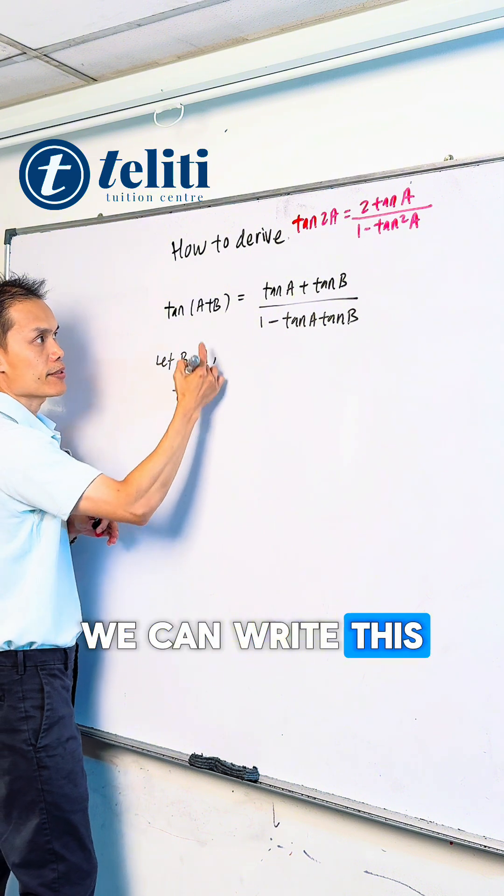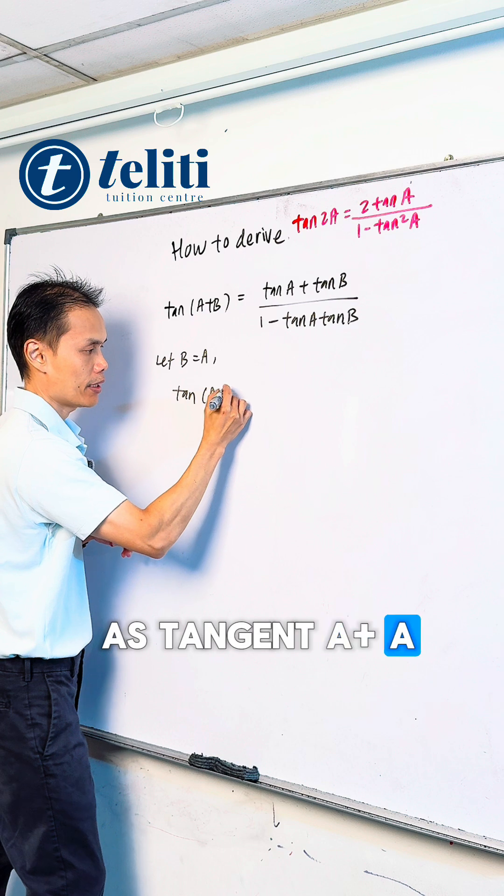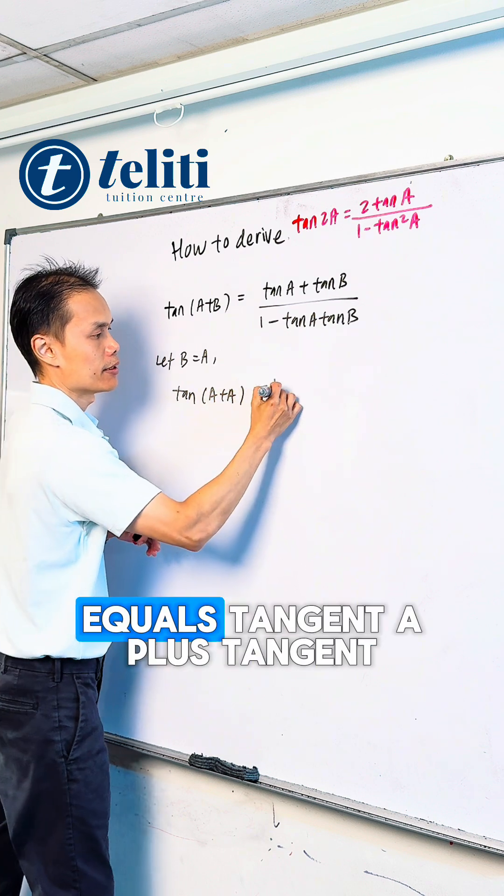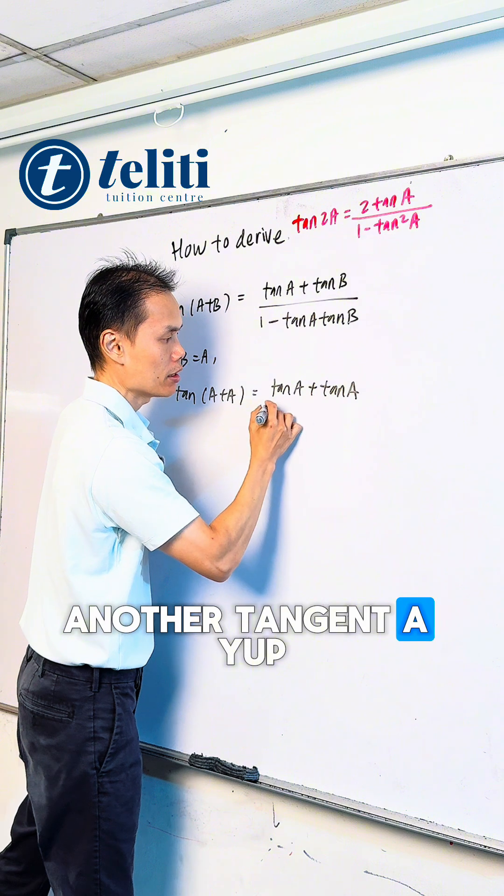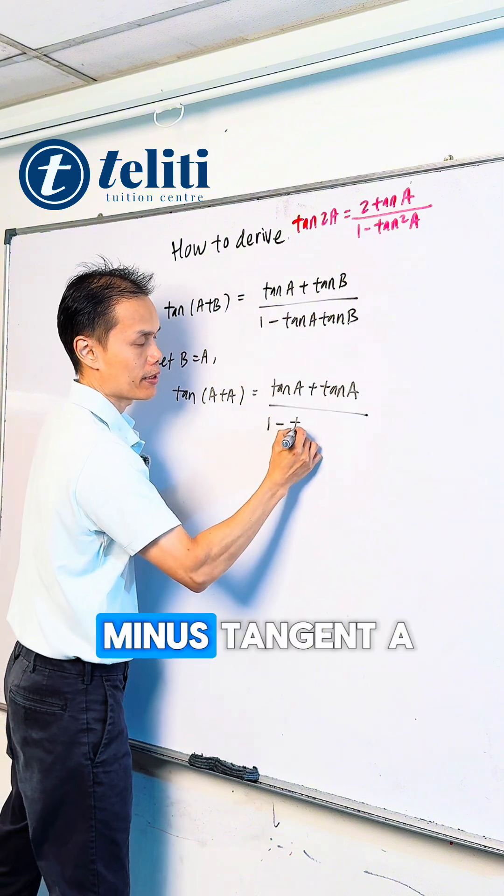We can write this as tangent A plus A equals tangent A plus tangent A. This will be 1 minus tangent A.